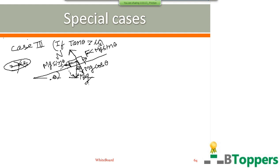Suppose F is less than mg sin θ, that is the magnitude of the component mg sin θ is greater than the magnitude of force applied parallel to the inclined surface. In that case the block tends to slide down the inclined plane. The frictional force on the block by the inclined surface opposes the relative motion, so the force of friction acts up along the inclined surface. If the block is at rest, the frictional force is static friction acting up along the inclined plane.